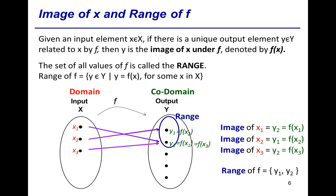What about y3, y4, and y5? They are not images of anyone, so they are not part of the range. Nevertheless, they still belong to the codomain.